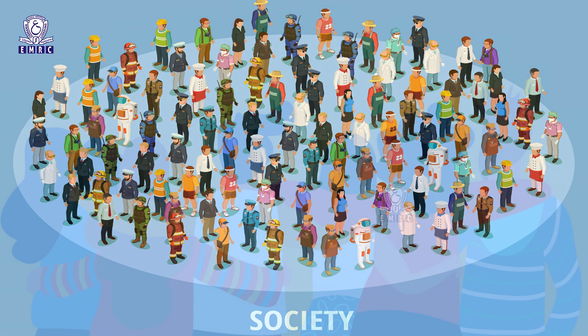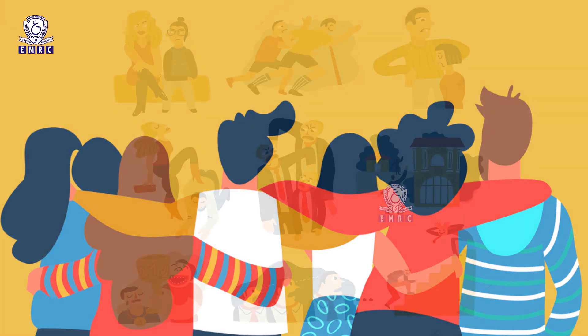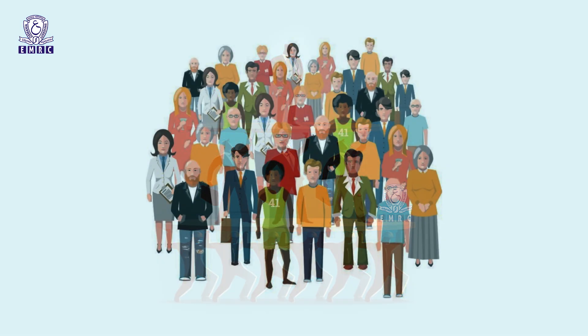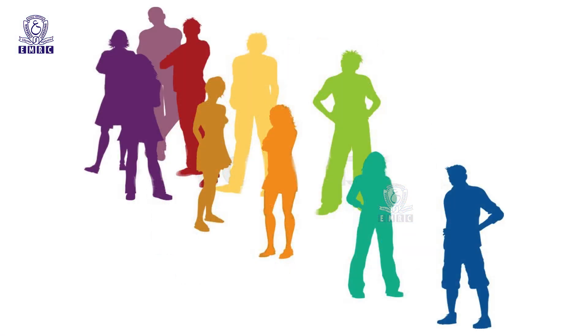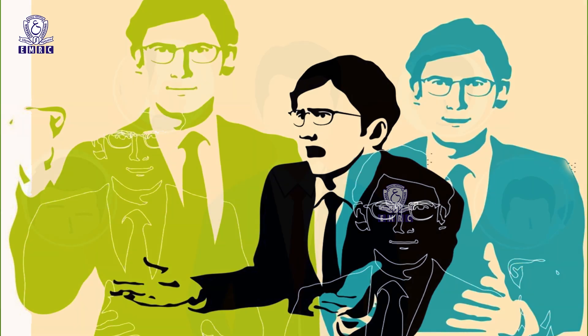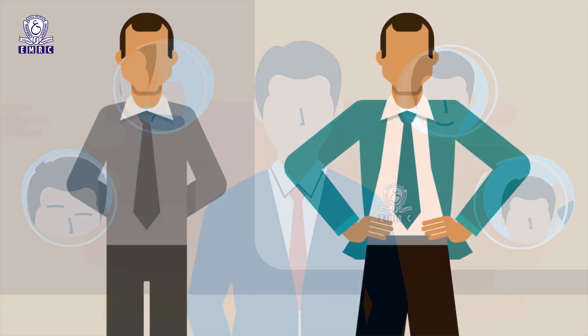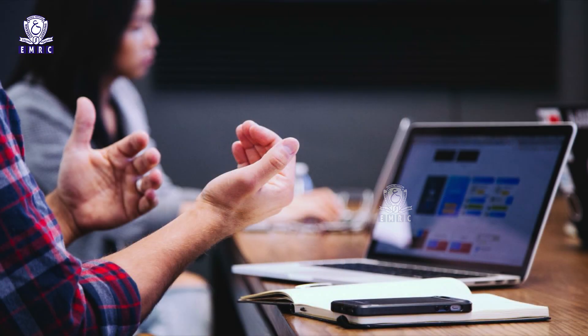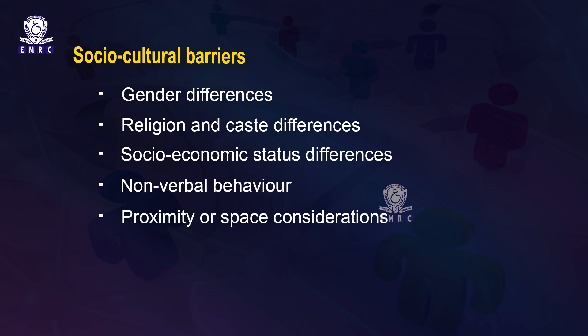When people across social statuses interact, there is a possibility of distortion of message due to the different life experiences, goals, needs, beliefs, and values that are associated with social status in society. Non-verbal behaviour such as gestures, mannerisms, facial expressions, eye contact, and body language differ with every culture, thereby creating confusion and misunderstanding while communicating. For example, Japanese people prefer to avoid eye contact with elders as a sign of respect, whereas Americans feel disrespected when eye contact is not maintained.